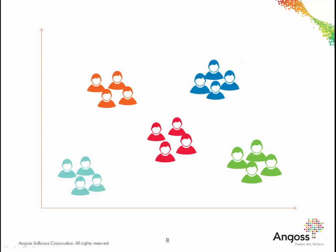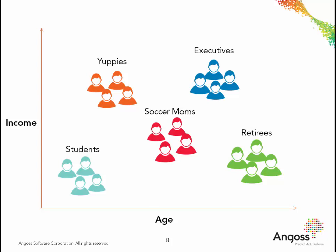Clustering algorithms group records with similar characteristics across a range of independent variables. Records are then scored with a number representing which cluster they belong to. For example, if five clusters are found, each record is assigned a number from one to five. Clusters can then be named based on their characteristics and marketed to accordingly.